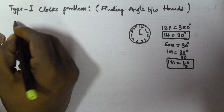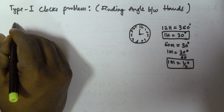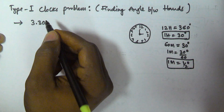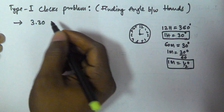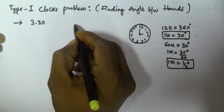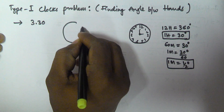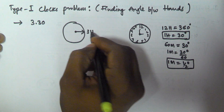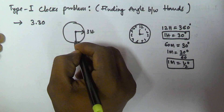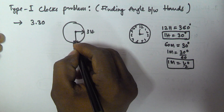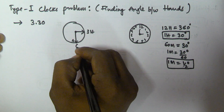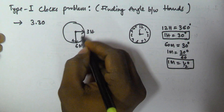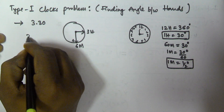Now let's find the angle between two hands when the given time is 3:30. So when the time is 3:30, the hours hand is at 3 and the minutes hand is at 6. So how many hours difference are there from 3 to 6? Three hours difference.